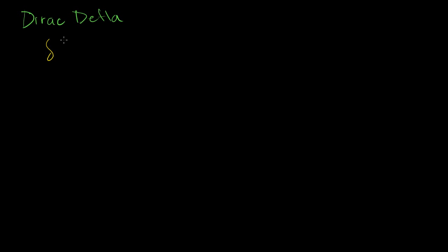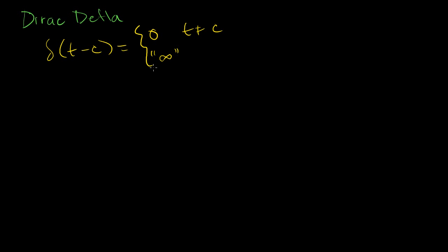If I shift it, so Dirac delta of t minus c, we can say that it equals 0 when t does not equal c — so it equals 0 everywhere. But it essentially pops up to infinity, and we have to be careful with this infinity. It's kind of different degrees of infinity, because you can still multiply this by other numbers to get larger Dirac delta functions when t is equal to c.